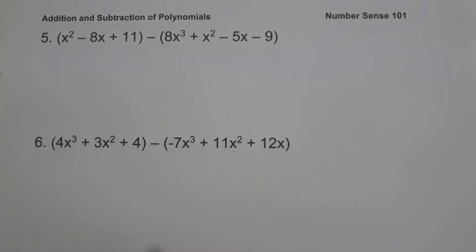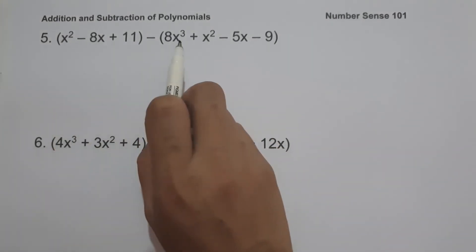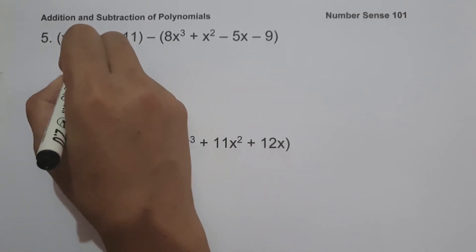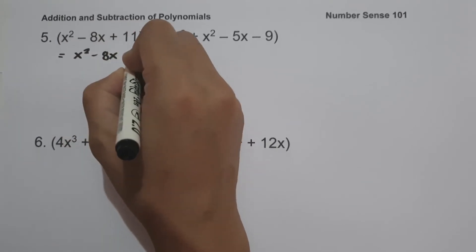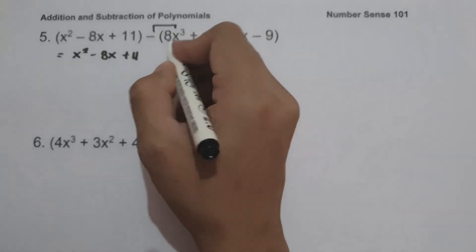On example number 5, we have the quantity x squared minus 8x plus 11, minus the quantity 8x cubed plus x squared minus 5x minus 9. In subtracting polynomials, always remember that we have to distribute the negative sign to the subtrahend. So let us rewrite this as x squared minus 8x plus 11, and then negative multiplied by 8x cubed is negative 8x cubed.